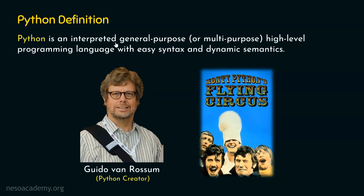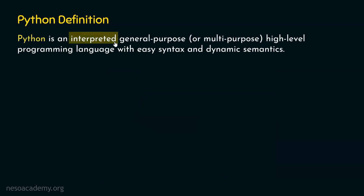Python is an interpreted, general-purpose or multipurpose, high-level programming language with easy syntax and dynamic semantics. In order to understand the meaning of this definition, we need to understand each and every word written in it. Let's first try to understand the meaning of the word 'interpreted'. What does it mean that Python is an interpreted programming language?